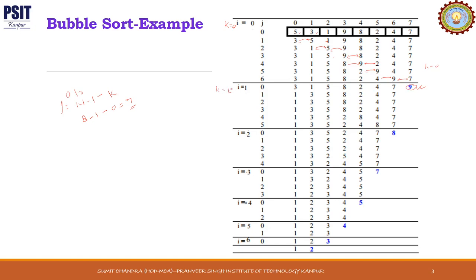Now k will be equal to 1. When k is equal to 1, j will run for n minus 1 minus k, that is 8 minus 1 minus 1, equal to 6 times — j runs 0 to 5. We compare 3 and 1; since 1 is smaller, exchange. We compare 3 and 5, no change. We compare 5 and 8, no change. We compare 8 and 2, swapped. We compare 8 and 4; since 4 is smaller, swapped. We compare 8 and 7, swapped. After the second pass, the second largest element is at its proper place — the second last index.